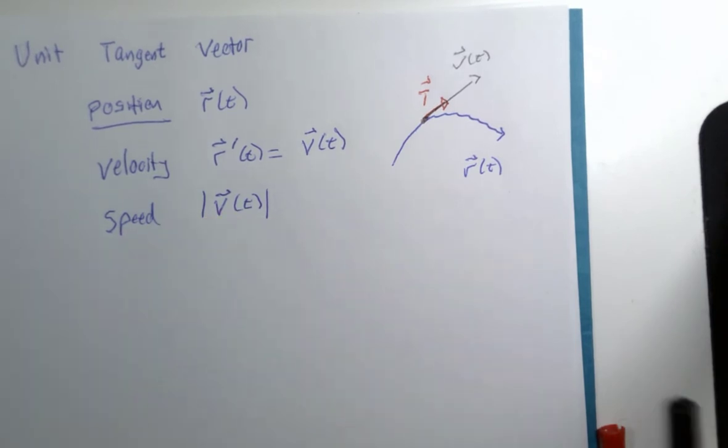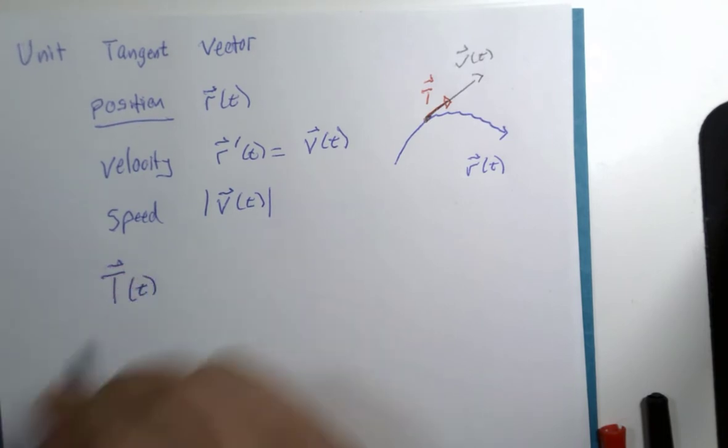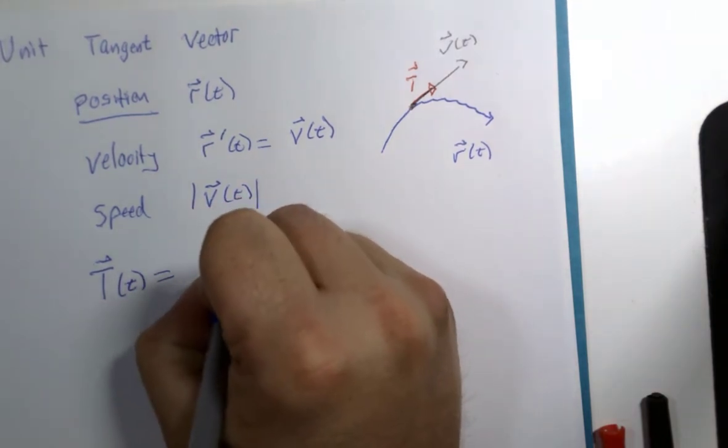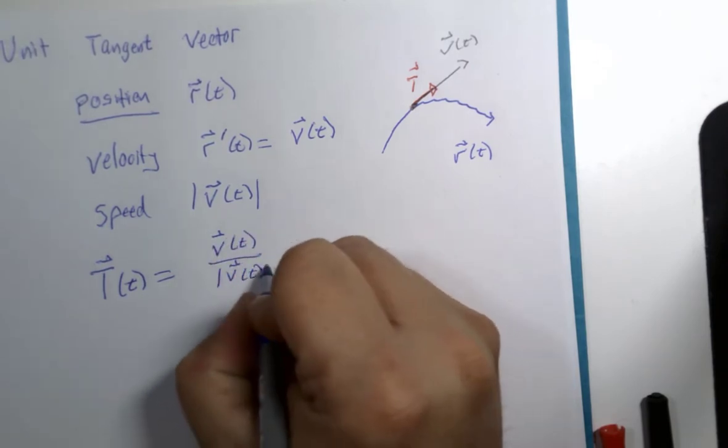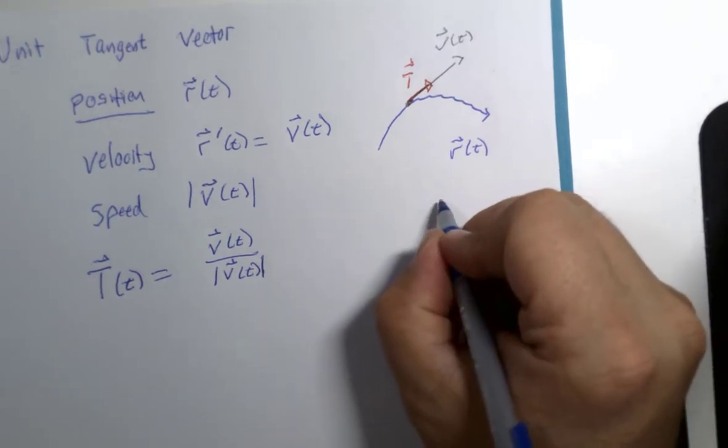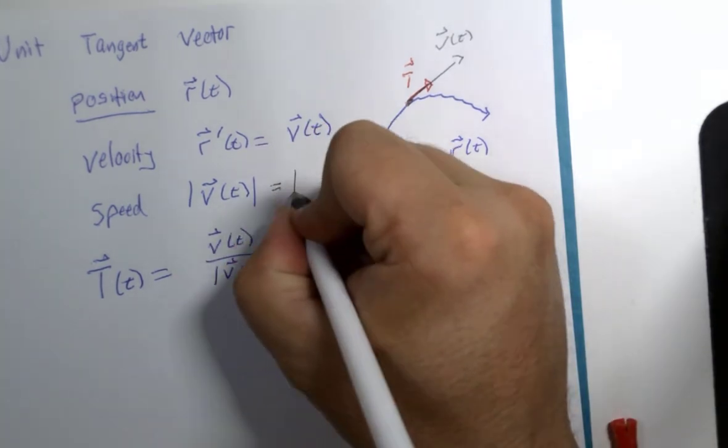So the unit tangent vector will have the capital T of T as its notation. How do you make a unit vector out of a vector? That's right, you take the vector in question and divide by its magnitude. Please recall that even in our book they use the other notation for magnitude, the double bars.